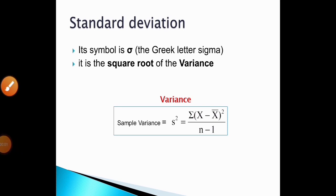The symbol for standard deviation is sigma. Standard deviation is the square root of the variance, given by the formula: root of sigma(x minus x-bar) squared, divided by n minus 1. The variance is s-squared, that is sigma(x minus x-bar) squared divided by n minus 1.